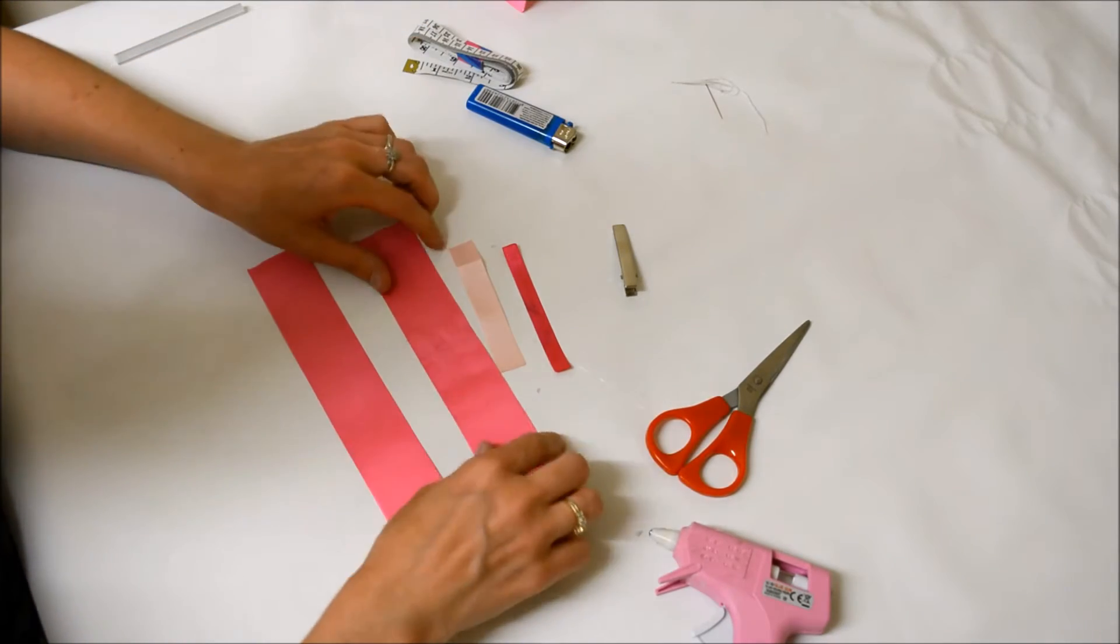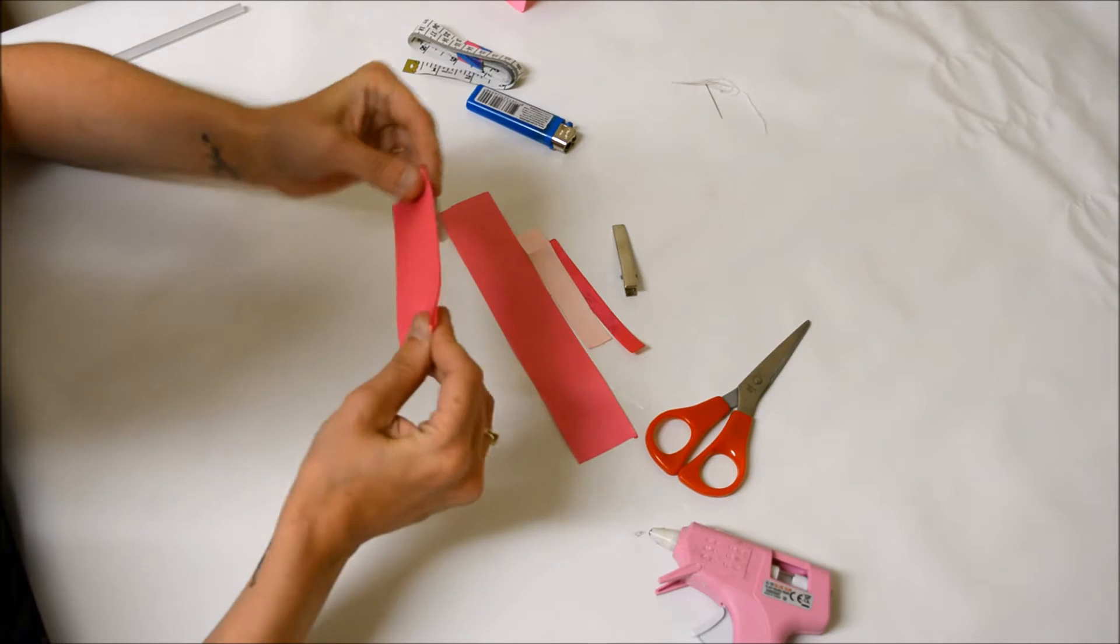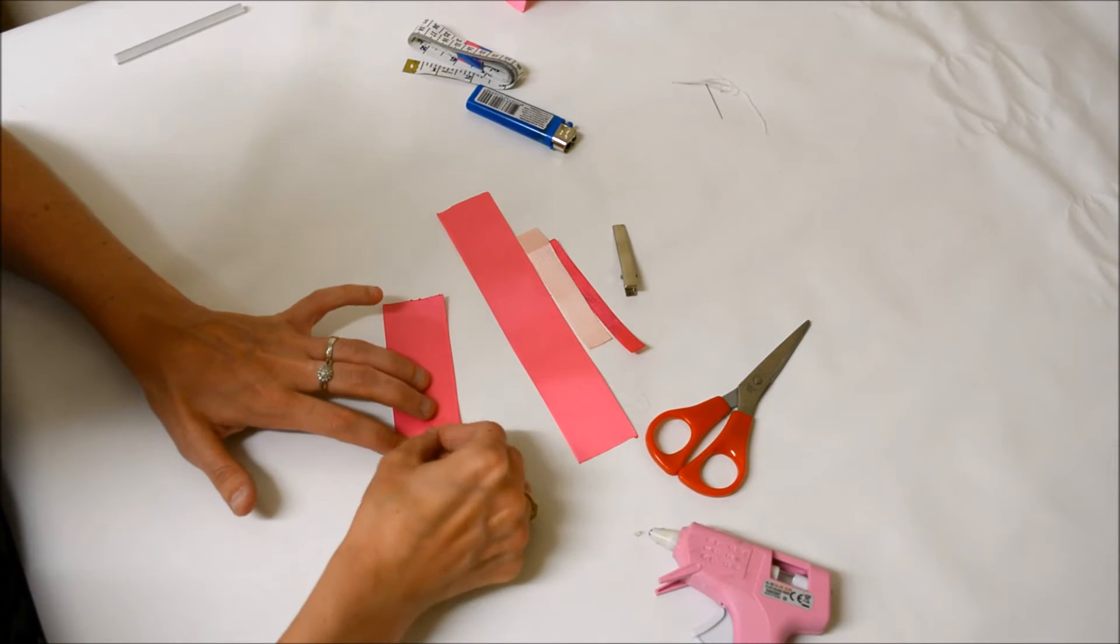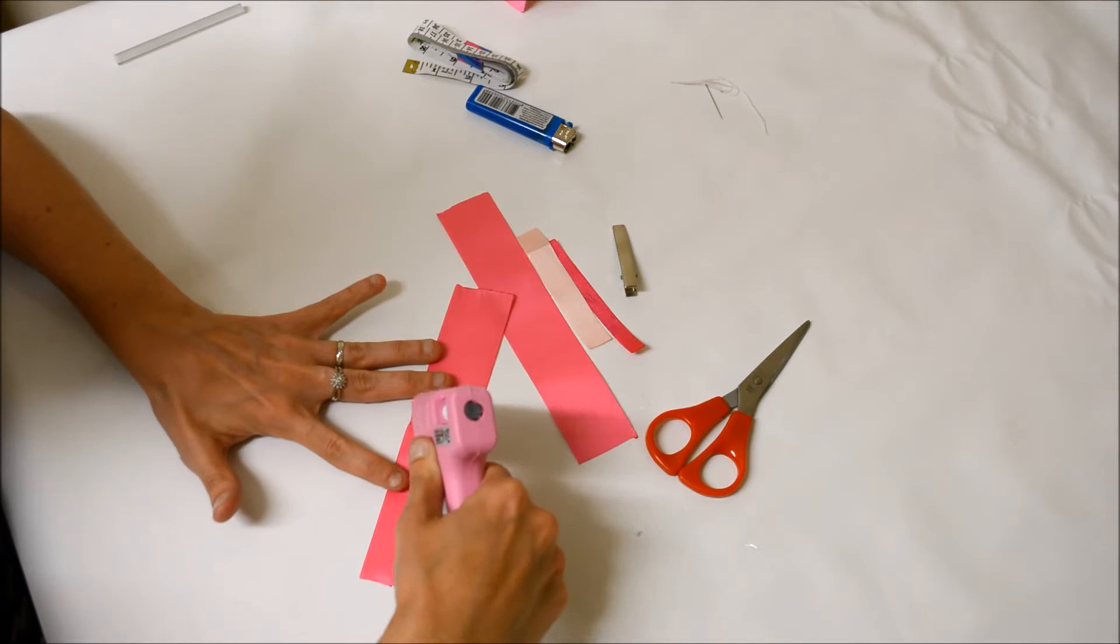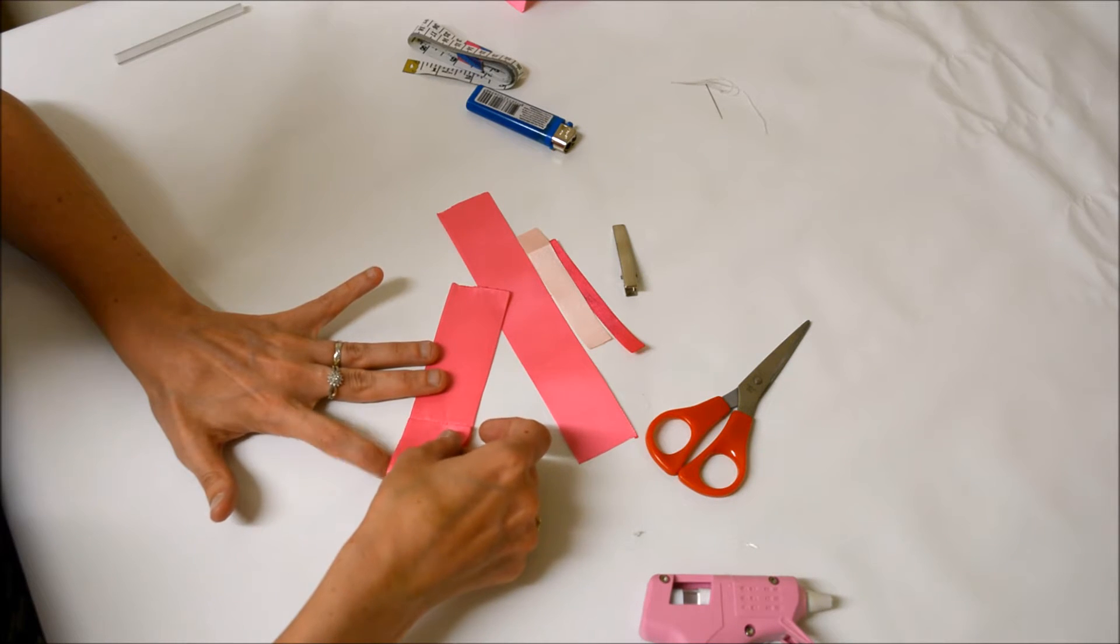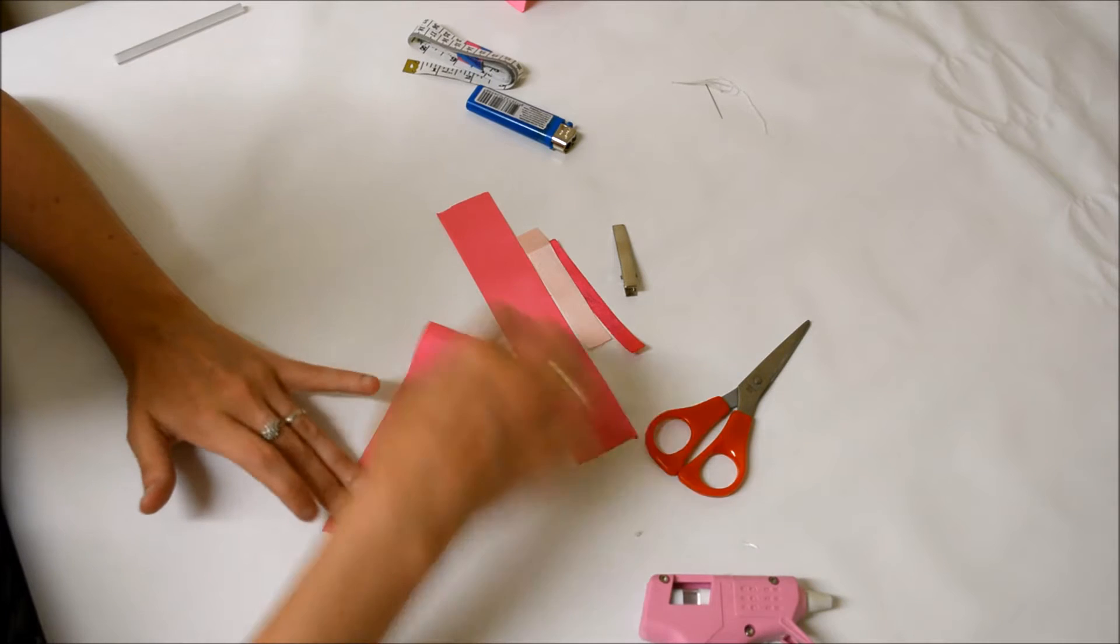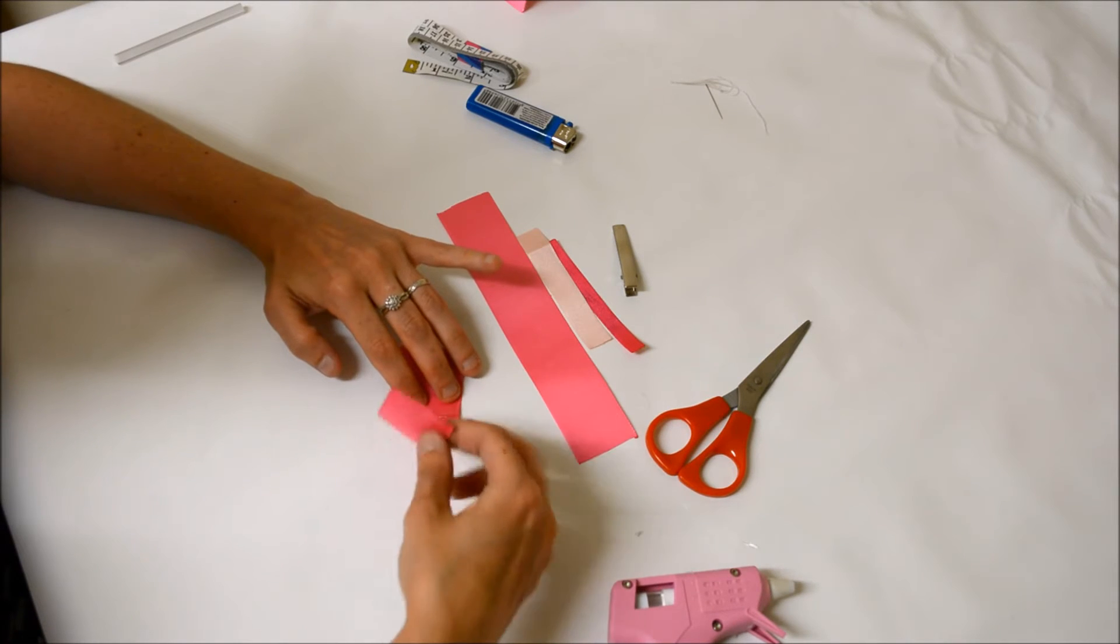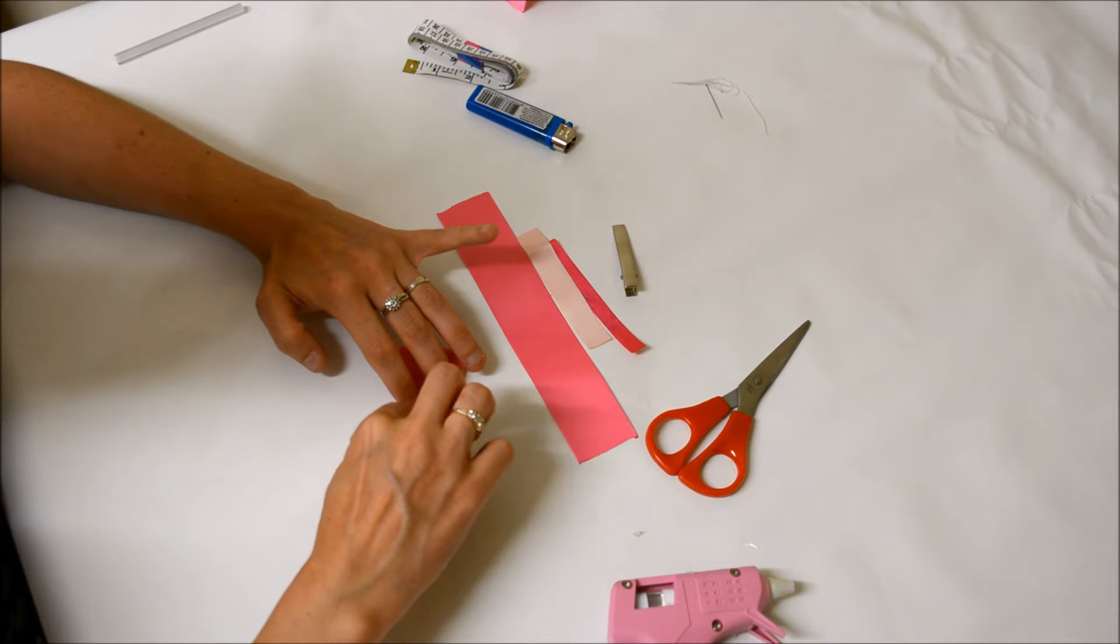So first things first, what you need to do is take your first piece of ribbon. Now I've chosen 38mm width. You can do it with smaller or larger ribbon but for this tutorial this is what I've chosen. So you need to fold the ribbon in half and make a predominant crease in the center. Then you need to open it out and along that crease place a line of glue. Now you want to bring the edge into the center and push down. Now you want to do exactly the same for the other side. Fold it in half to make a nice crease.